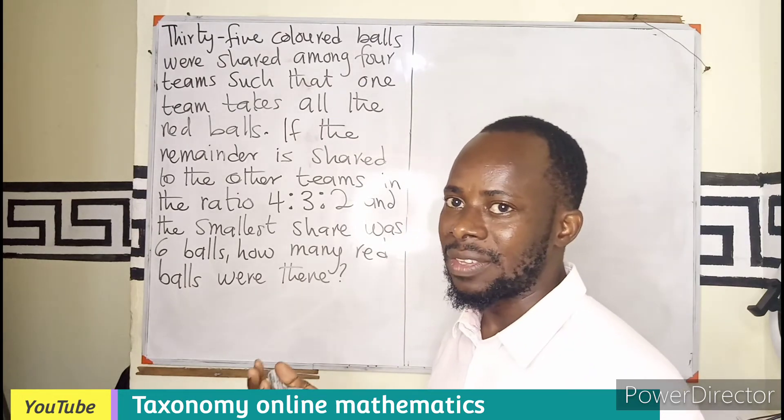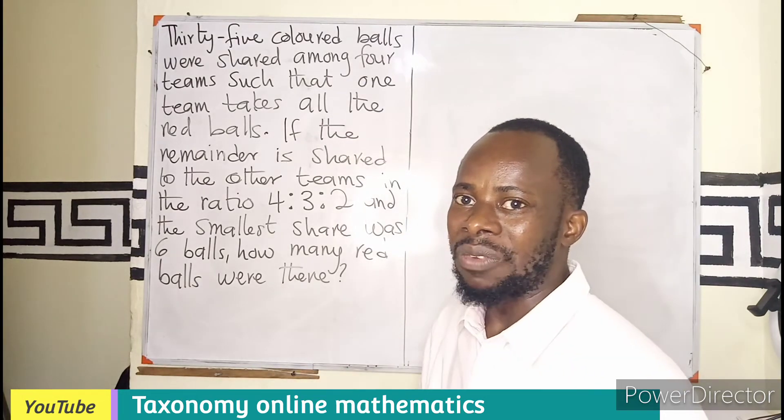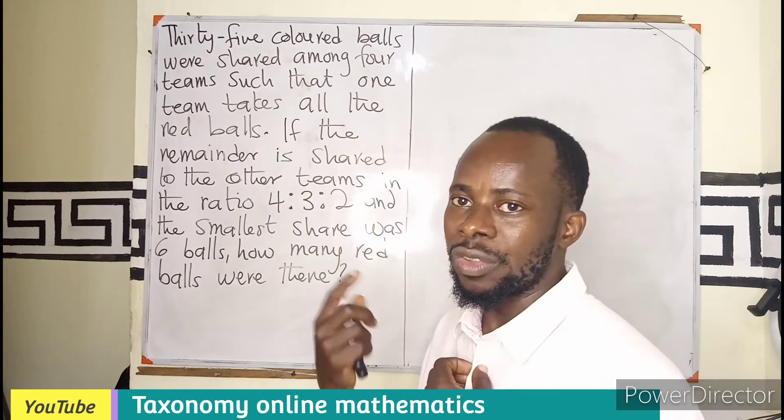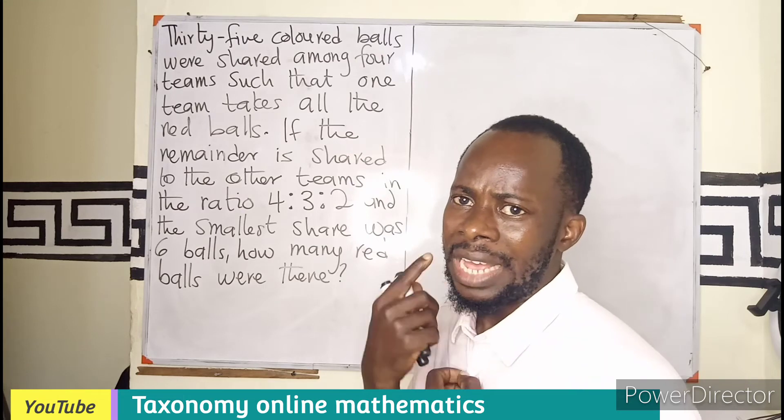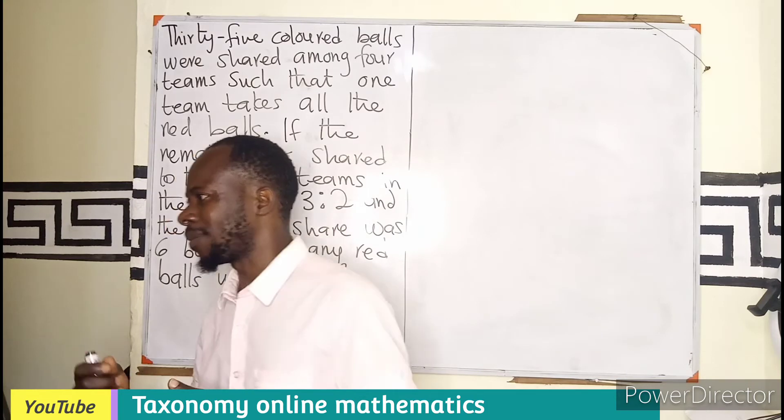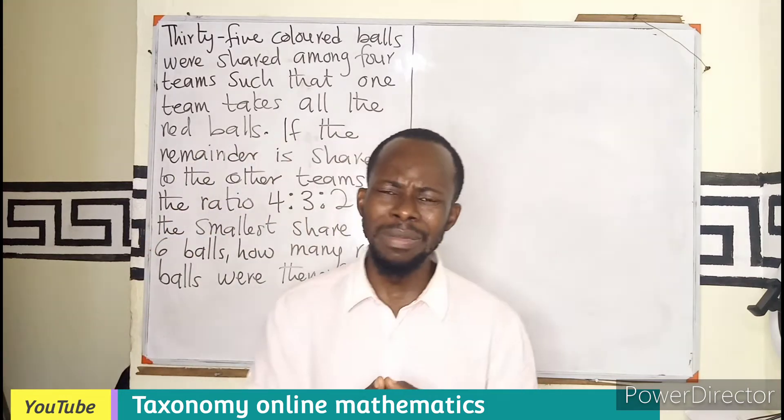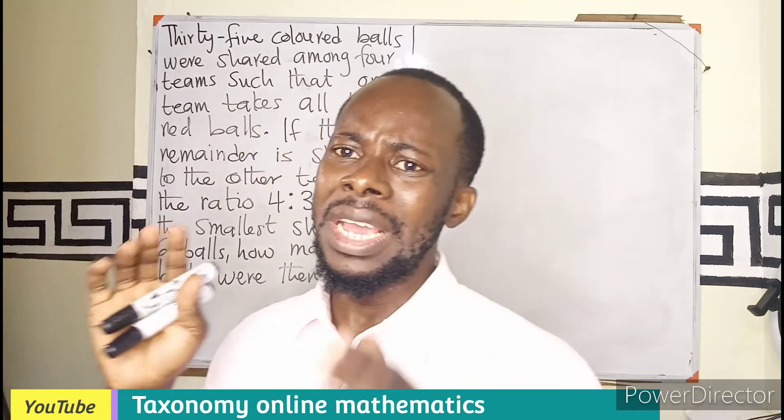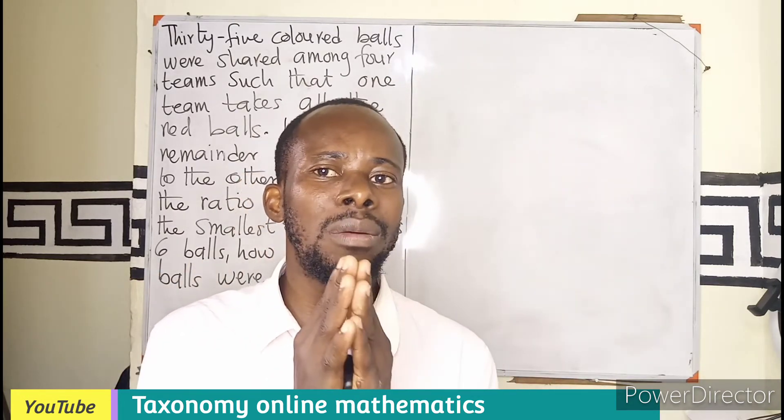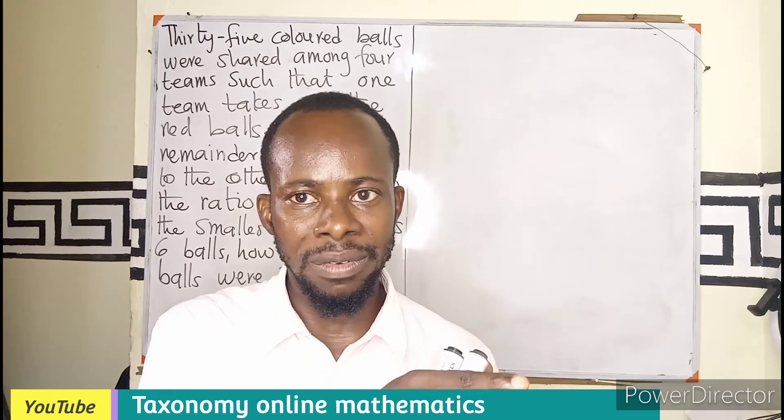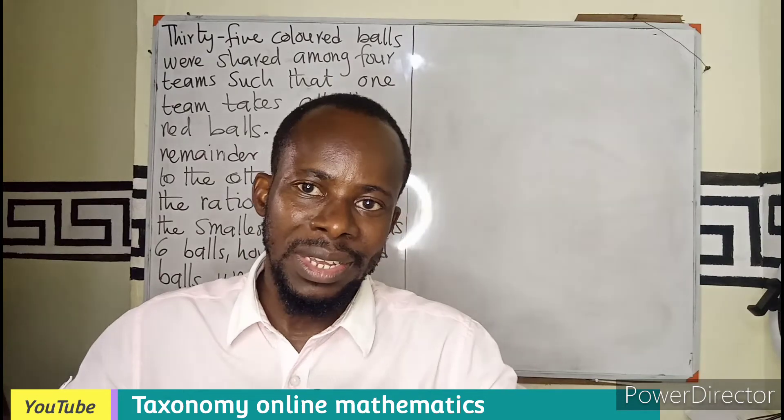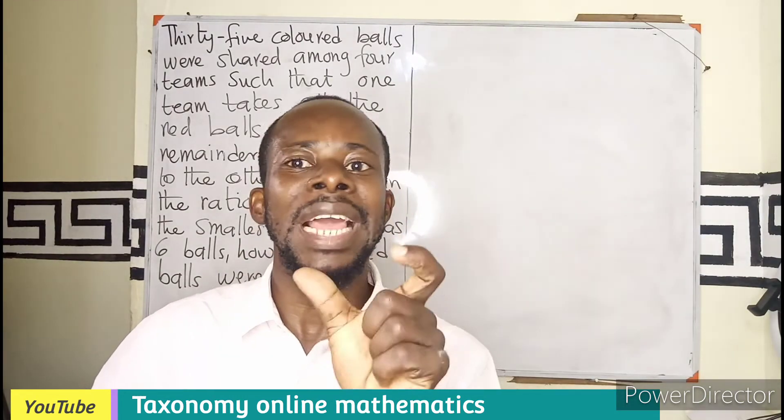So our task is to find how many red balls were in the total balls. Let's take the scenario whereby we have 35 balls. Then we assume that the red balls are 10. If the red balls are 10, then it means that we have to take away the 10 from the total balls, which is 35. So 35 minus 10 will have given us 25. In this case, we know that the red balls are 10.